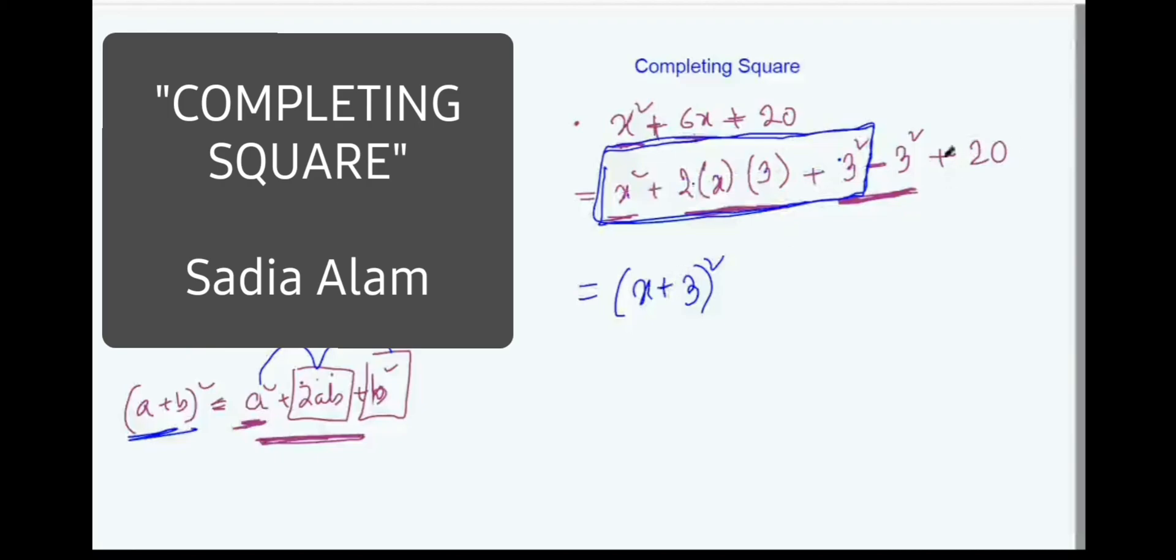And then you have minus 3 square is 9 plus 20. So the final line is x plus 3 whole square plus 11.